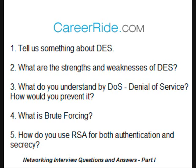How do you use RSA for both authentication and secrecy? RSA is a public key encryption algorithm working on the mathematical concept that it is easy to find and multiply large prime numbers together, but it is extremely difficult to factor their product. For authentication, one can encrypt the hash of the data with a private key — this is known as a digital signature. For secrecy, it is achieved by encrypting the data with the public key and decrypting with the private key.